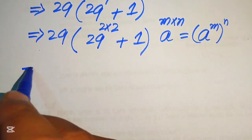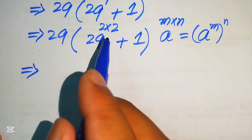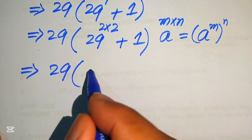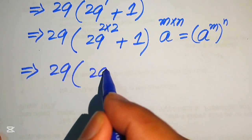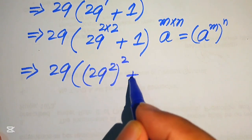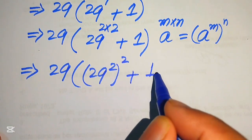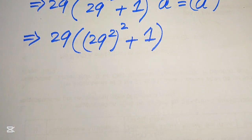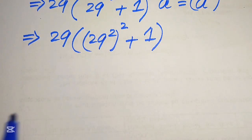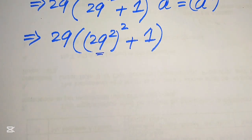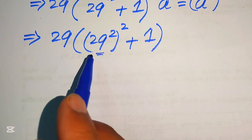According to this exponent law, we move the 2 inside and rewrite the expression as 29 times of 29 squared, whole squared, plus 1. Now to move forward we first need to find the value of 29 squared.